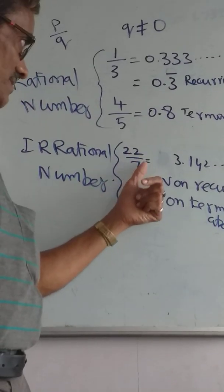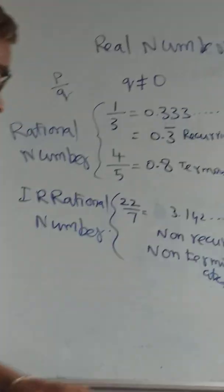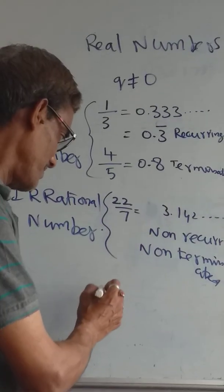Then only we call it a rational number. But here I gave one example, 22 by 7, which is 3.142... That is non-recurring, non-terminated.